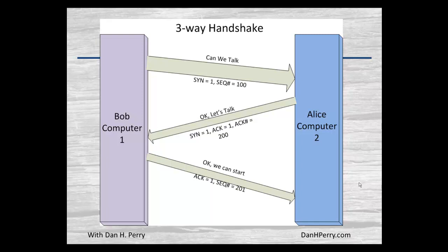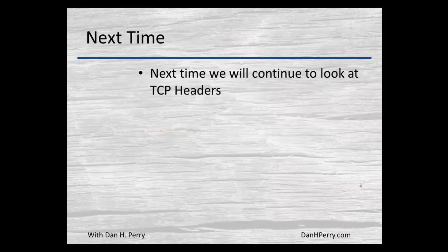Then Bob sends back a third packet with an acknowledgement of Alice's synchronization, and the sequence number gets incremented as we go. Essentially Bob says 'hey, we need to talk,' Alice says 'okay,' and they have exchanged sequence and acknowledgement numbers that allow them to send large amounts of data across multiple packets and ensure no data is lost during transmission. In the next installment we're going to continue looking at these headers.